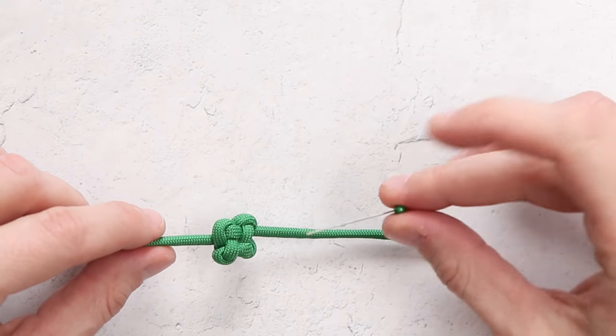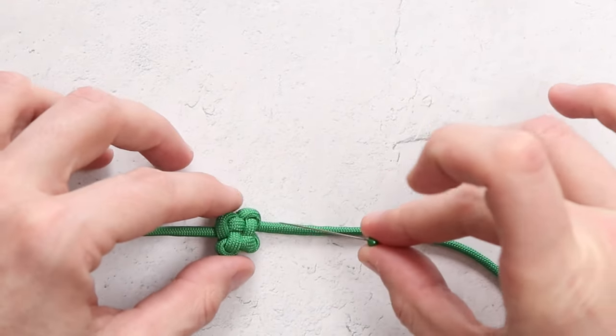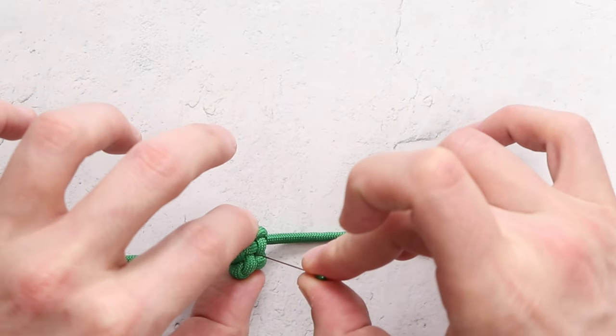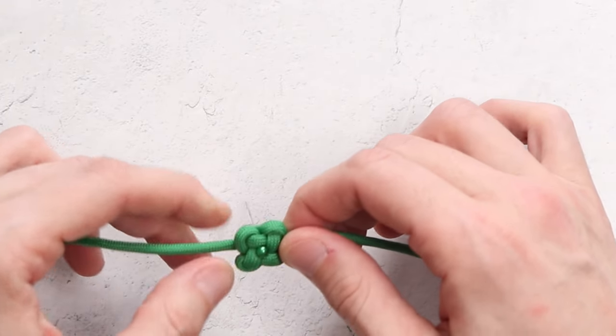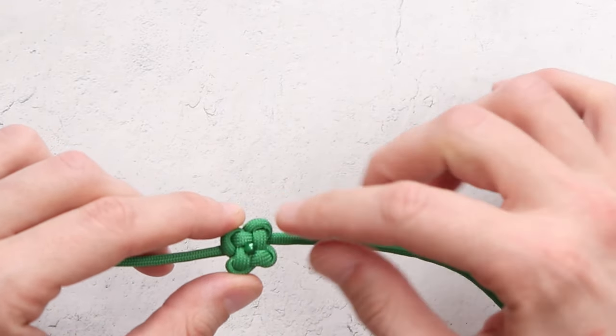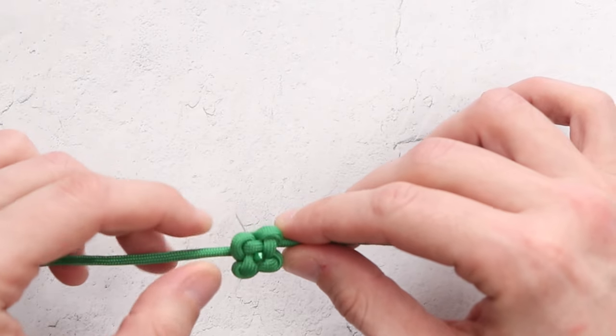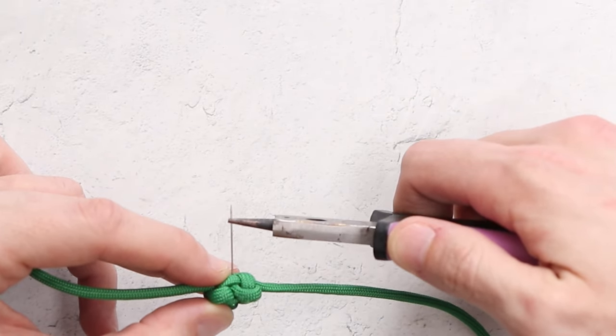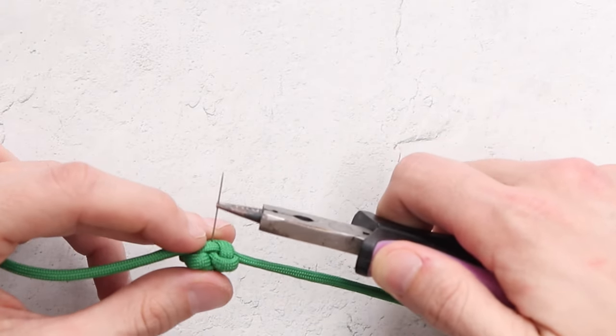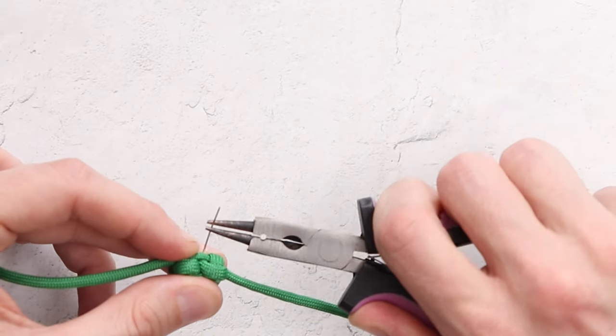And the way that we're going to do that is we're going to take a straight pin, and we are going to just stab our knot right through the middle until it comes out the back. We have chosen the color green to make a nice little button on our four-leaf clover. We're going to take a pair of jewelry pliers, and we are just going to grab that pin, and we're going to bend it.